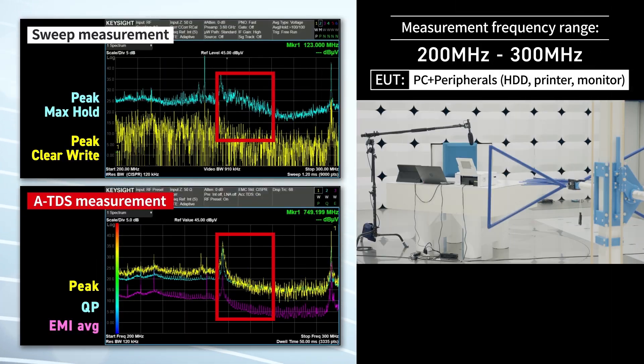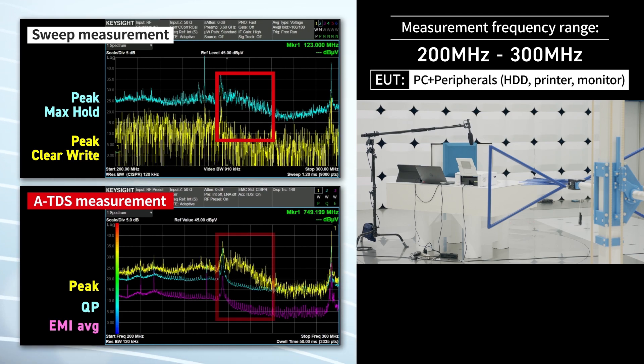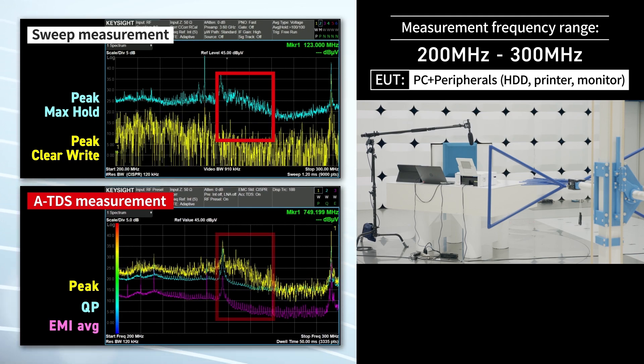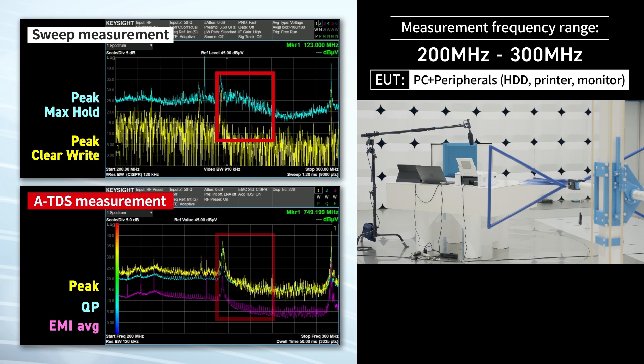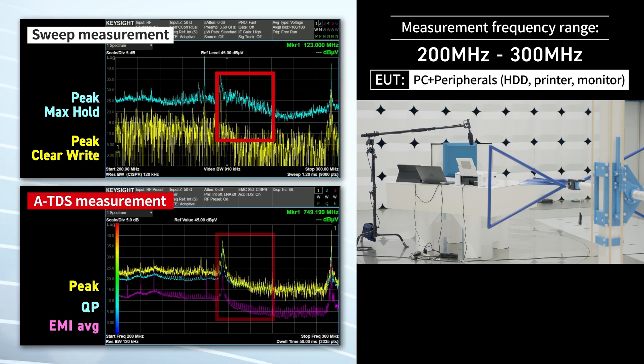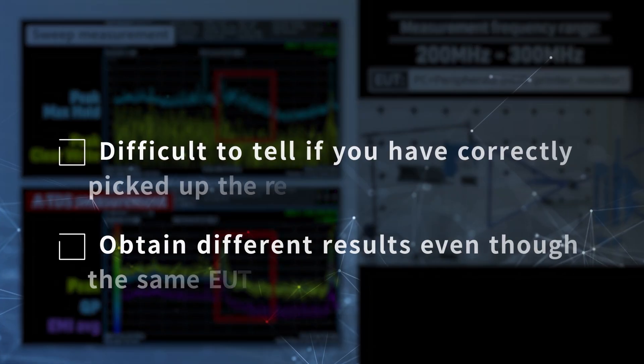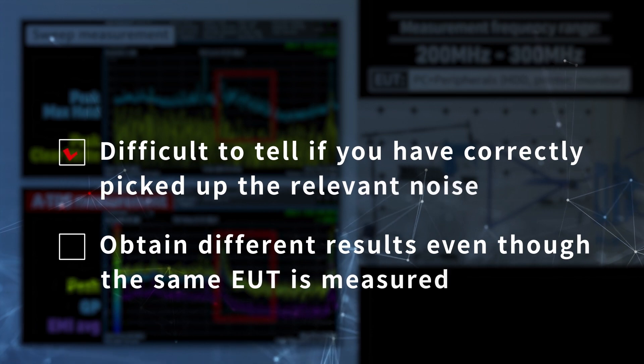We looked closely at the place where we had seen a high noise level during the sweep measurement using the peak detector and max hold. Using the ATDS feature with the QP detector turned on, we can easily tell the level was not as severe as we originally thought. Like this, we can select the right noise.